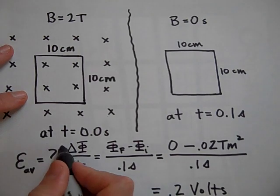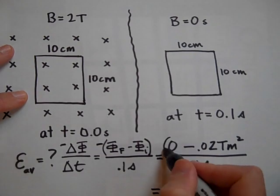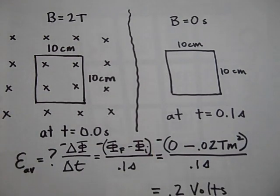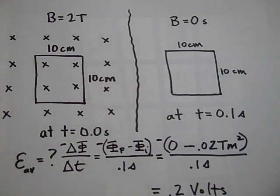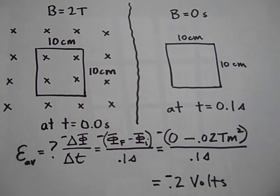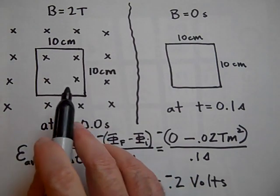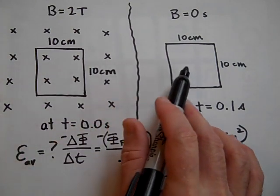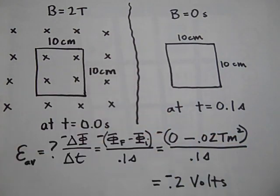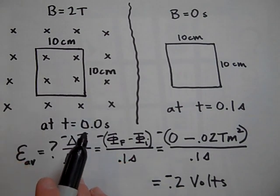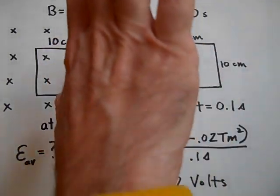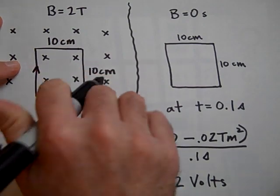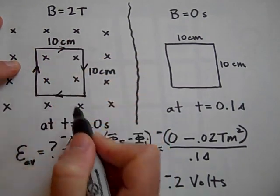And there's a negative sign here. That negative is supposed to show you the direction that the current will be induced. Since there is a magnetic field in the loop and then it disappears, this hoop is going to try to make its own magnetic field into the page — it's going to try to stop the magnetic field from changing. So the current that's induced will go this way. That's Lenz's Law.